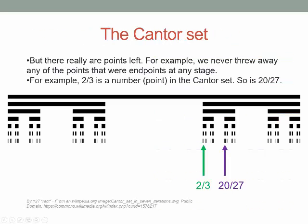I can actually name specific points that really are in the Cantor set. To begin with, anything that was ever an endpoint at any stage of any one of the line segments is still there. For example, the number 2/3: it was there in the beginning, and when we threw out the open middle third we said we're not going to throw out the endpoints. So we kept 2/3, and we never throw it away later — it's there forever at every stage, and so it's there in the limit in the Cantor set. The same is true of 20/27. All of those endpoints are part of the Cantor set. But that's not all — there are others.